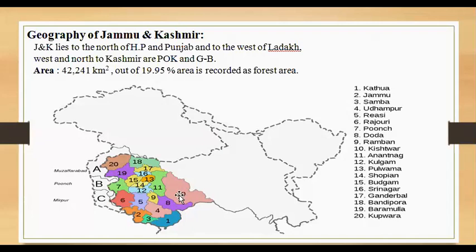In Jammu and Kashmir, there are a total of 20 districts, including Kathua, Jammu, Samba, Udhampur, Reasi, Rajouri, Poonch, and others. Not all districts have been explored for butterflies — even I have not visited all districts and have explored only a few.